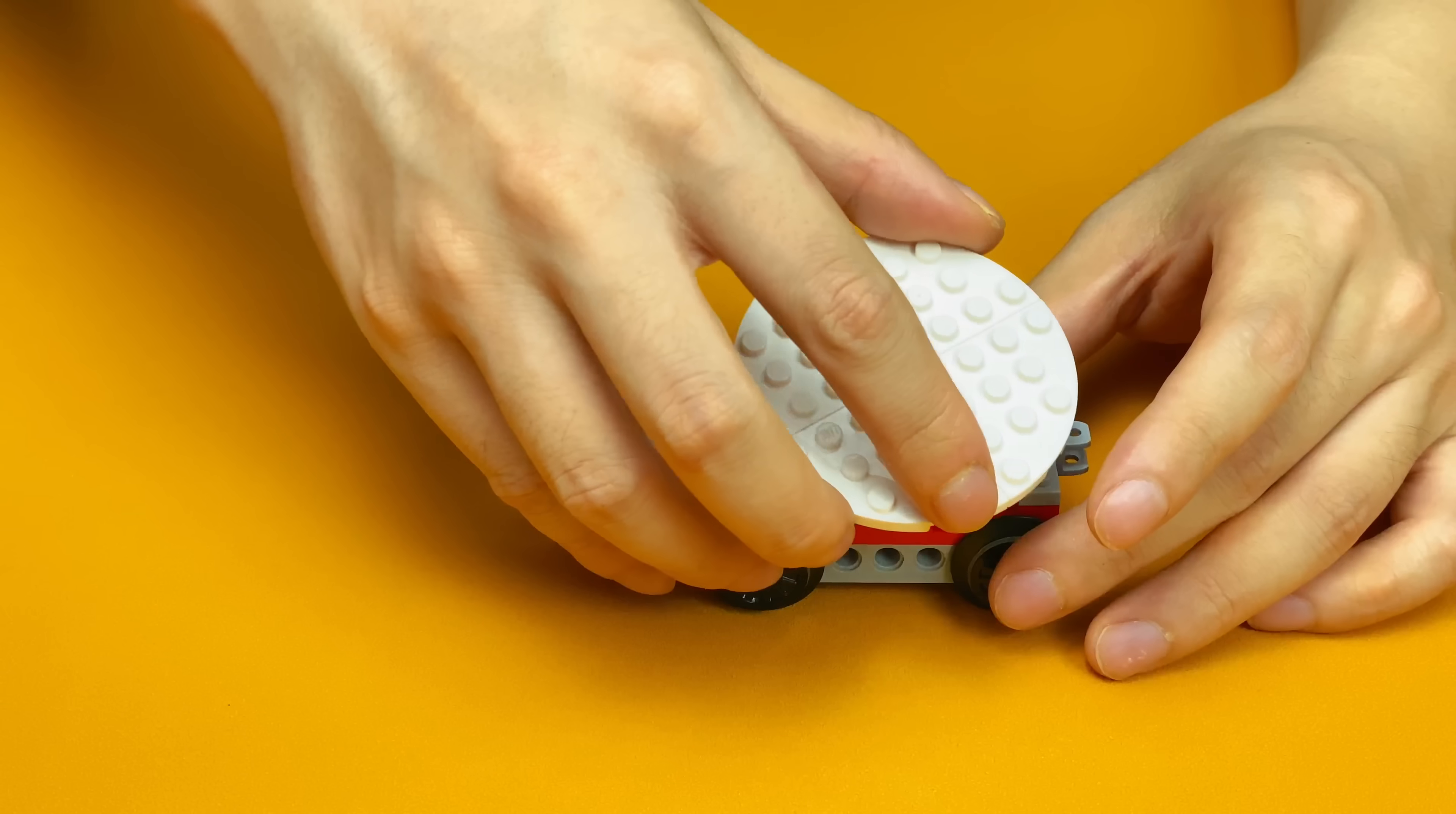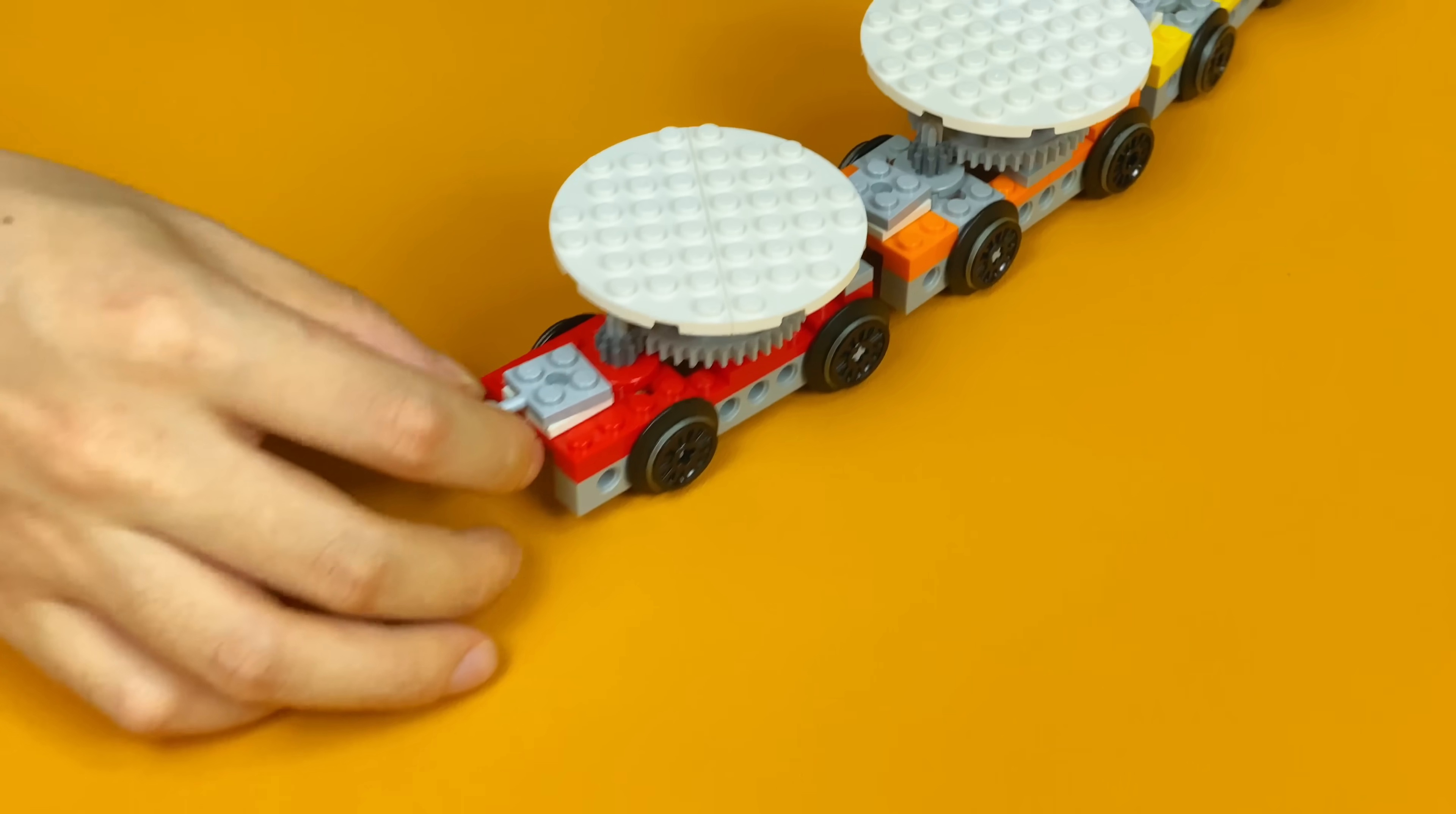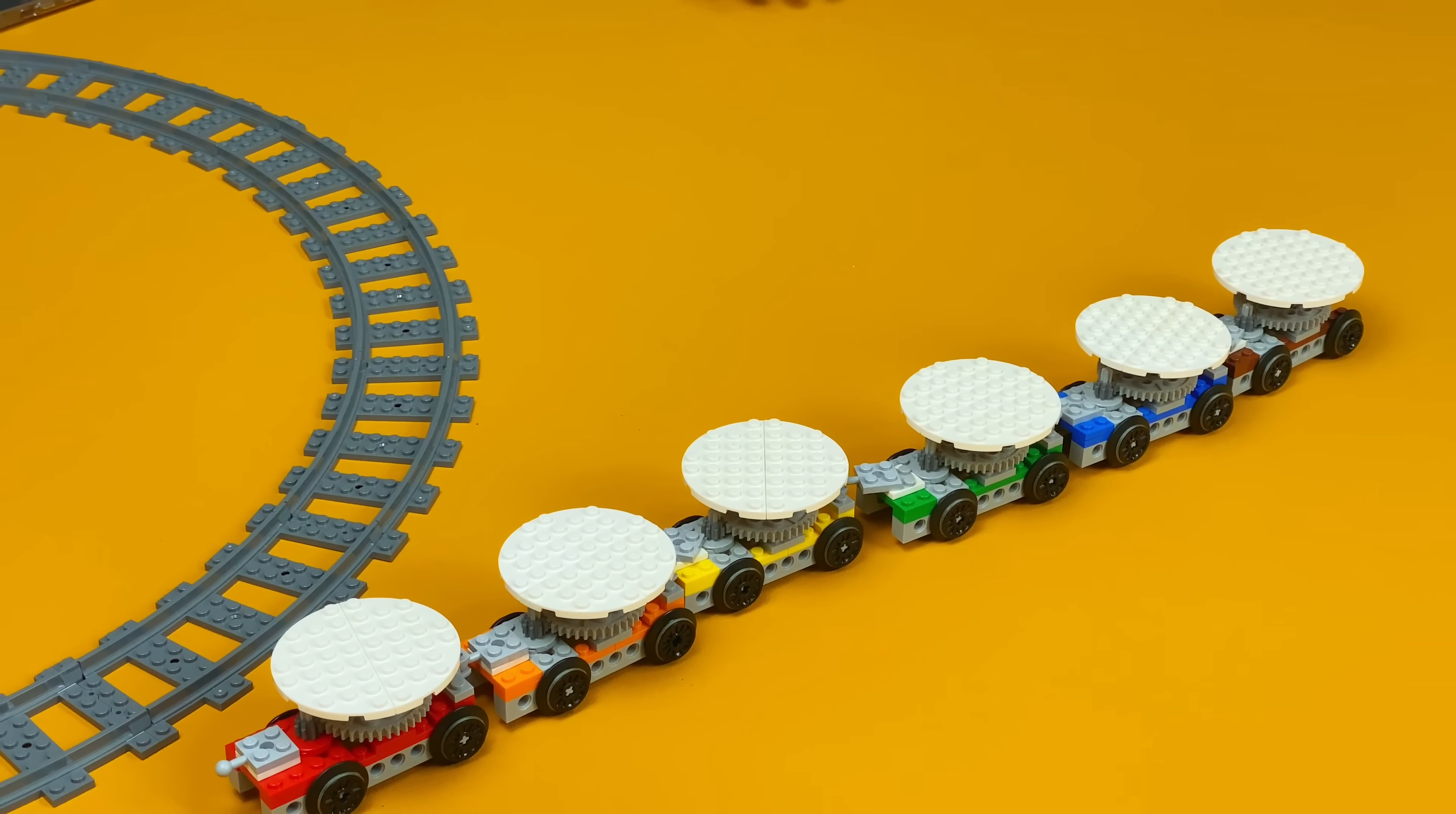So I built a Lego train, which every carriage has a rotating disc on the top, so I can put sushi on it. Connect the carriages and guide them to the rail. Now they're ready for sushi.